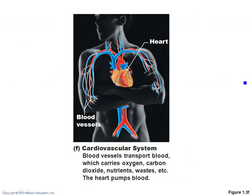The cardiovascular system is your heart and blood vessels. Its main function is transport — transporting blood throughout the body. It carries oxygen to the body, takes carbon dioxide and other waste away, and delivers nutrients. It takes the good stuff to the body and brings the bad stuff back so we can get rid of it.